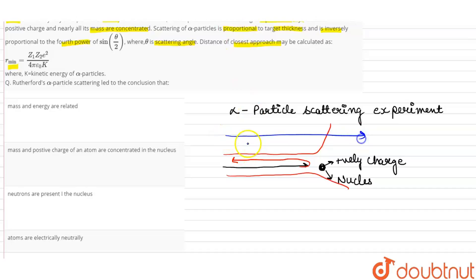So the highly positive charge is concentrated in the nucleus which is present in the center. So option B is our correct option.